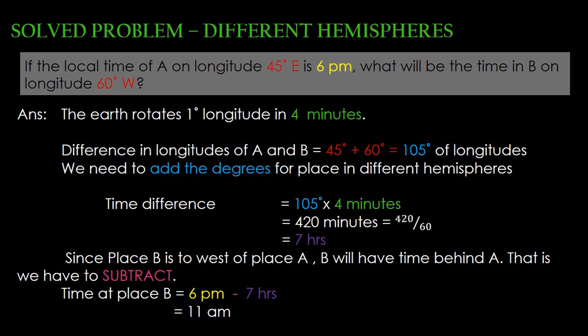If the local time of A on longitude 45 degrees east is 6 pm, what will be the time in B on longitude 60 degrees west? The first step is to find out the difference in longitudes of A and B. Here both the longitudes are in different hemispheres, so we need to add the degrees: 45 degrees plus 60 degrees is equal to 105 degrees of longitude.